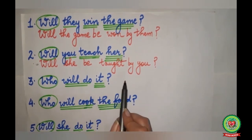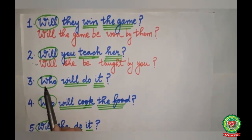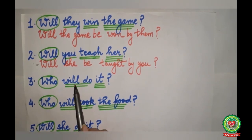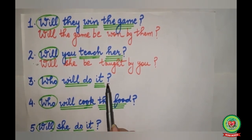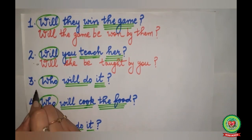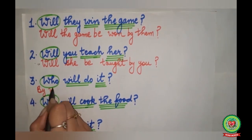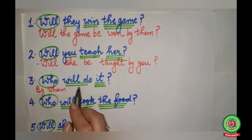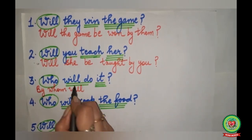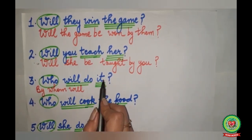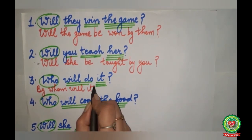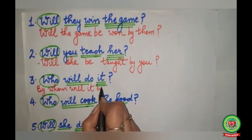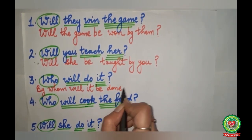Third question: 'Who will do it?' There is no subject in the question. 'Who' is the question word. 'Do' is the action word. 'It' is your object. Passive: 'By whom will it be done?' with a question mark.